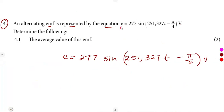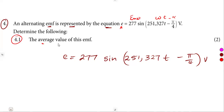Remember, the instantaneous value is equal to the maximum value times the sine of omega T minus alpha. So we have omega, then T, and also the phase shift of pi over 4. The question asks us to determine several things. For 4.1, the average value of this EMF — remember, the maximum value is already given as EMF equal to 277 volts.